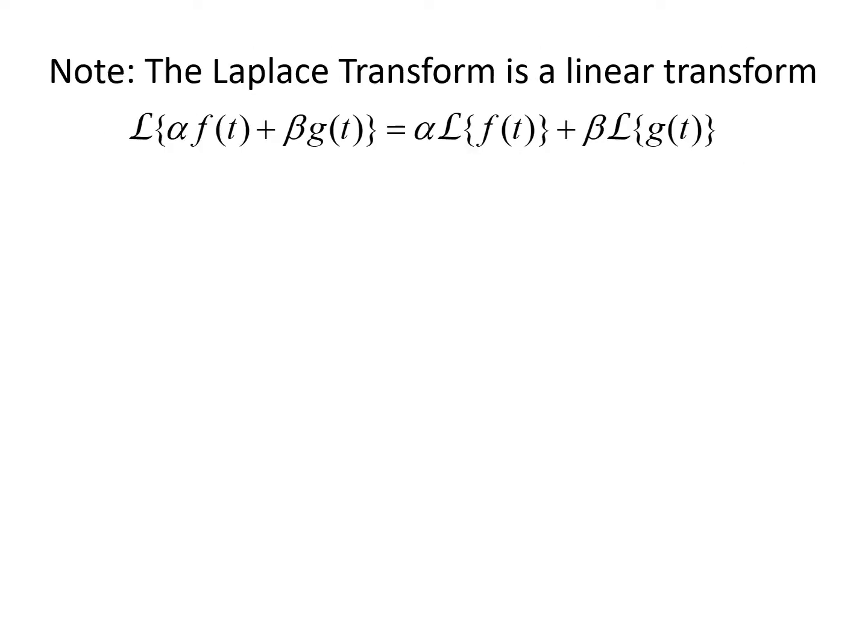It's important to note that the Laplace transform is a linear transform. That means if I take the Laplace transform of alpha times f of t plus beta times g of t, I can pull the coefficients outside and evaluate term by term. So this equals alpha times the Laplace transform of f plus beta times the Laplace transform of g. Let's do some examples to see how this works.